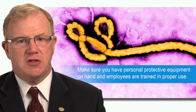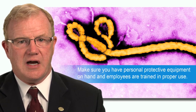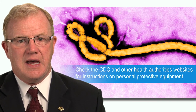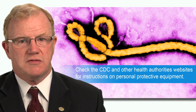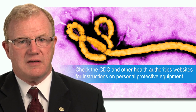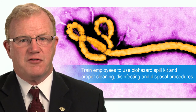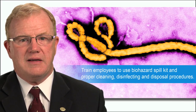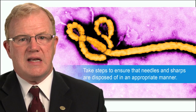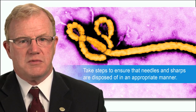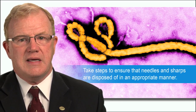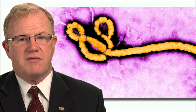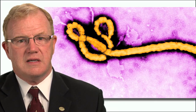Make sure you have personal protective equipment such as gloves, goggles, and gowns on hand, and that employees are trained in their proper use. Check the websites of the CDC and other health authorities for instruction on the proper sequence for putting on and removing personal protective equipment. To limit the spread of infection after a vomit or diarrhea event, make sure employees are trained to use a biohazard spill kit and proper cleaning, disinfecting, and disposal procedures. And take steps to ensure that needles and sharps are disposed of in an appropriate manner. These are the basics that every organization can do every day — steps you can take to help ensure an environment that is healthy for your customers, your employees, and for you.